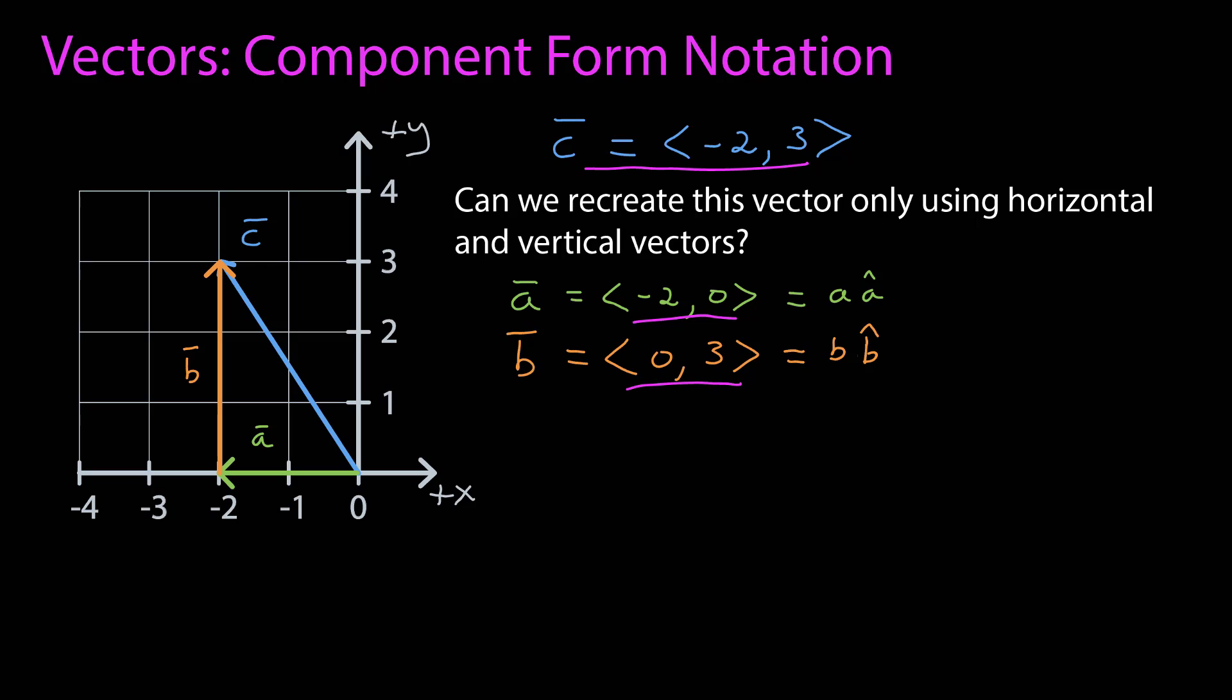From before we know that we can represent these vectors as the product of the magnitude times their own unit vector. A unit vector is a vector with magnitude 1 that points in the direction of the original vector. But I don't want to do that as I want to represent it in terms of the Cartesian basis vectors i-hat and j-hat.